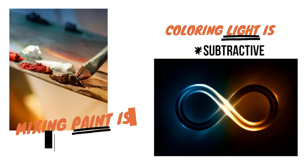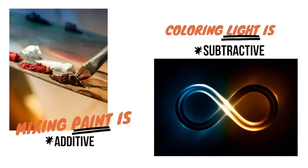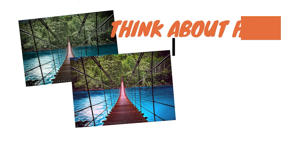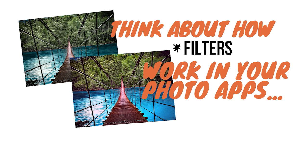Mixing paint is an additive process — what that means is we keep adding colors until we get to the one we want. The more colors we throw in there, the more we tend towards black. Lighting, on the other hand, is subtractive. The colors are all there to begin with and look white. To get to the color we want, we subtract the colors we don't want by absorbing them. Think about how filters work in your photo apps. You have your photo that has certain colors in it, and then you put a filter on top of that image, and that changes the way those colors appear. All the filter does is change what gets absorbed and reflected — some colors pass through more strongly, others get absorbed more strongly.